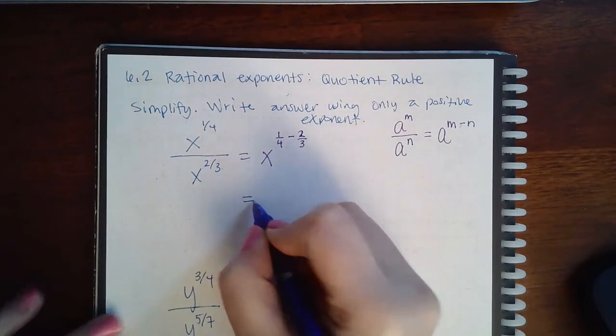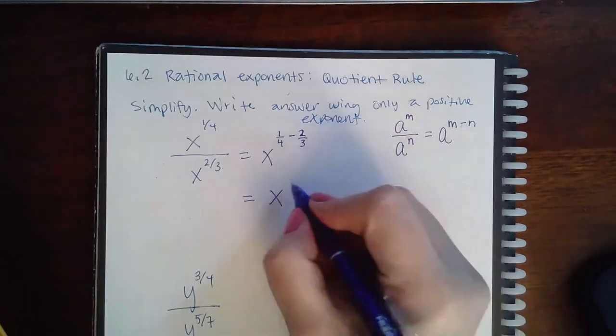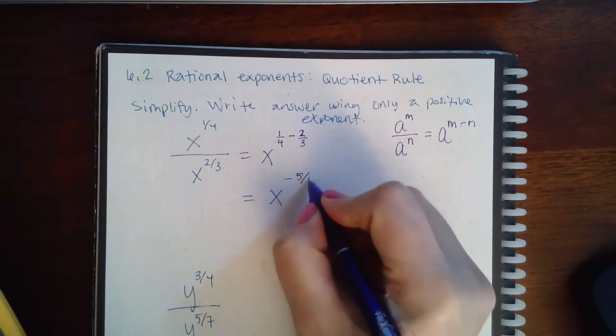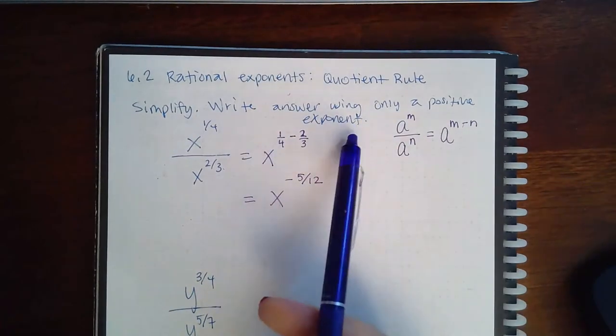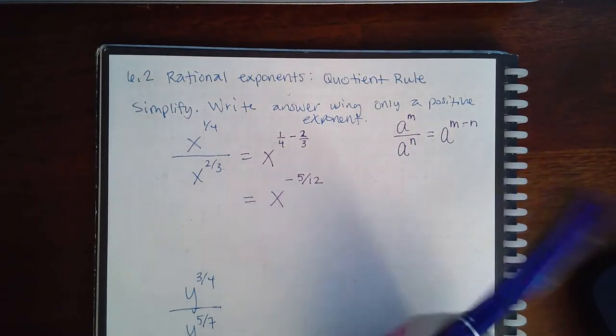And 1 over 4 minus 2 over 3 is actually equal to a negative 5 over 12. But the directions do say write your answer using only positive exponents.